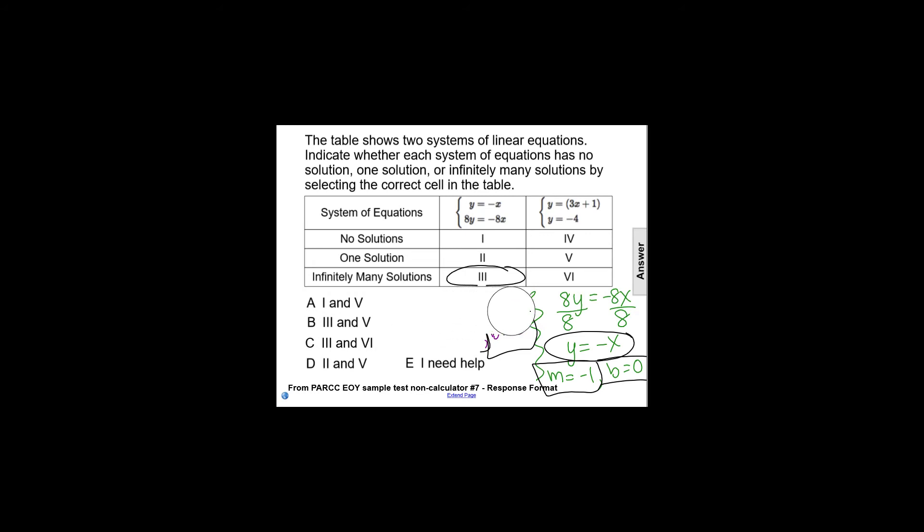Now we're going to do the same exact thing to the second system. We've found that the first system has infinitely many solutions, because when written in slope-intercept form, those are the same equation for the same line.